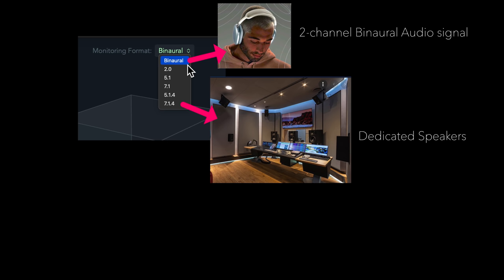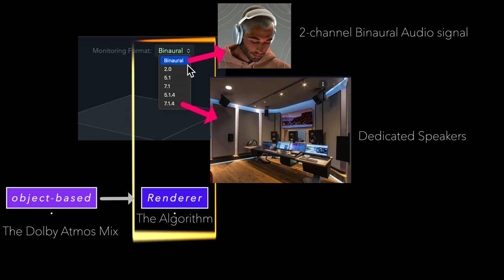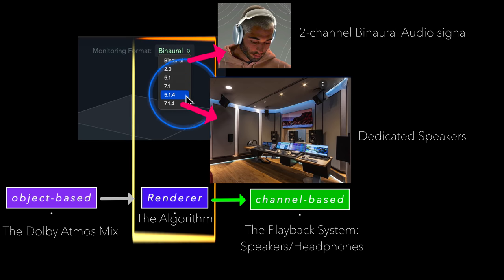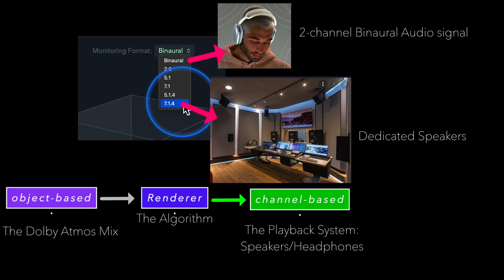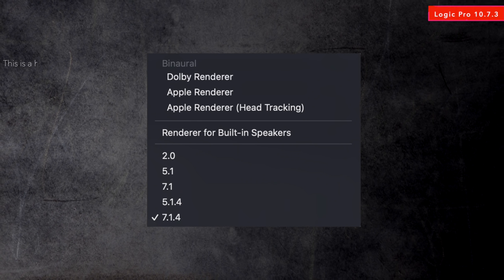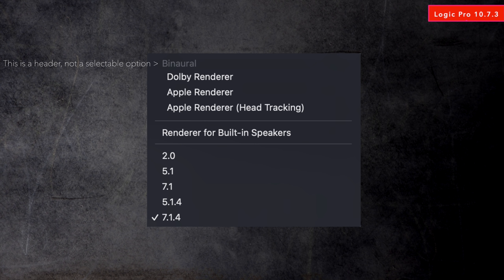The magic behind all those various monitoring formats is called a renderer. This is the heart of the Dolby Atmos system that takes the immersive Dolby Atmos mix — the object-based mix — and renders it to a traditional channel-based mix, which means playing it back on a specific number of speaker channels, the ones listed in the monitoring format pop-up menu. This is just a simplified explanation, but you can read all the details in my book, Mixing in Dolby Atmos. Now let's look at the monitoring format pop-up menu in the new 10.7.3.